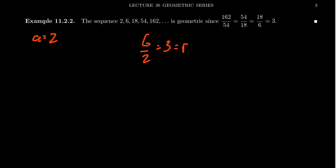Looking at other ratios, 18 divided by 6 is likewise 3. If we take 54 divided by 18, that's also 3. If we take 162 divided by 54, that's also 3. All consecutive terms in this sequence, if we divide them, will always give us 3. This is evidence that our sequence is in fact geometric.